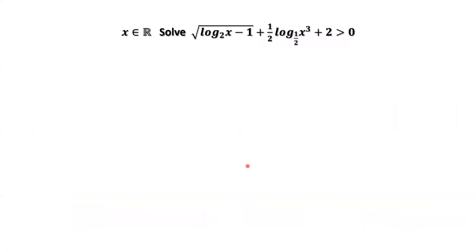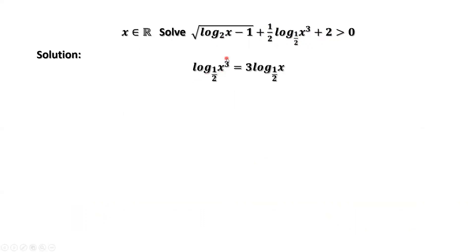How to solve this inequality? We have two log functions with two different bases — one is 2, one is one half. We need to convert one base to the other. Let's convert the base one half to 2. For log of x to the power of 3 to the base one half, we take the power of 3 downstairs to the front, which gives 3 times log of x to the base one half.